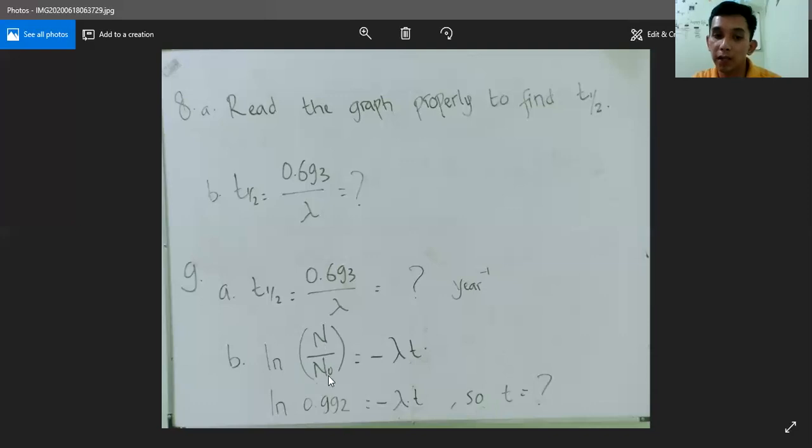So we just simply put the original formula of half-life. Logarithm natural of N over N₀ is equal to negative lambda times t. So N over N₀, as I mentioned to you, is 0.992. You can use your calculator to calculate it, and then use the lambda from here to find the time t.